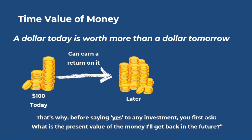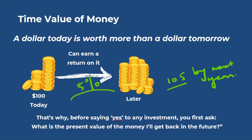Let's start with something really basic: the time value of money. A dollar today is worth more than a dollar tomorrow. It sounds obvious, but this one idea is the foundation of all financial decision making. If I gave you $100 today and you could invest it in a fixed deposit earning 5%, you'd have $105 by next year. But if you received $100 next year instead, you'd be losing that opportunity to grow — a loss of five dollars.